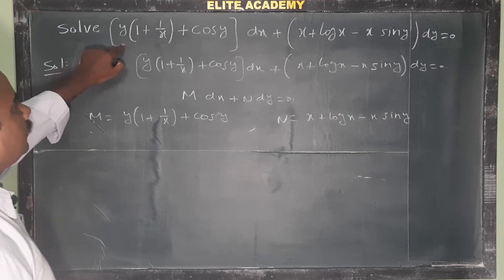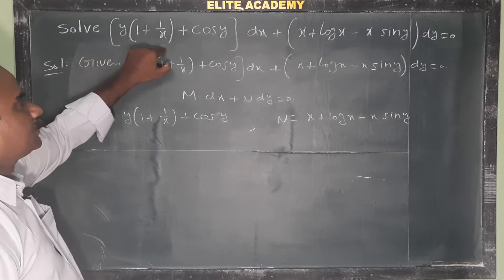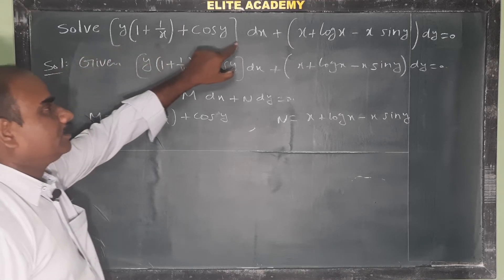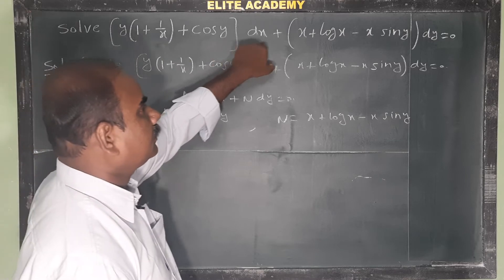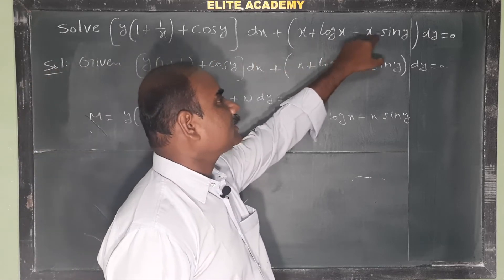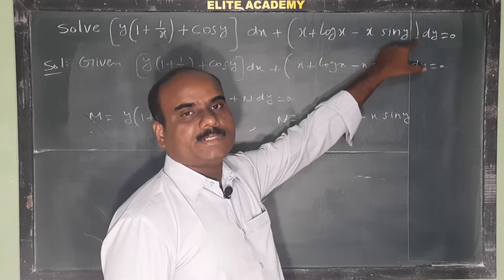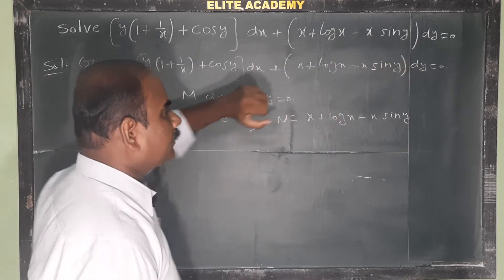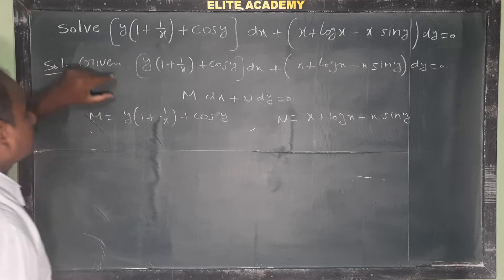Solve: y(1 + 1/x + cos y)dx + (x + log x - x·sin y)dy = 0.